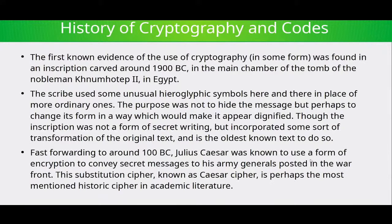The first known evidence of the use of cryptography was found as an inscription carved around 2000 BCE in the main chamber of the tomb of a nobleman in ancient Egypt, using unusual hieroglyphic symbols in place of more ordinary ones. The purpose was not necessarily to hide the message but perhaps to change its form to appear more dignified. Despite not being a secret code, it incorporated some transformation of the original text and is the oldest known text to do so.